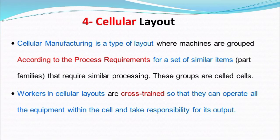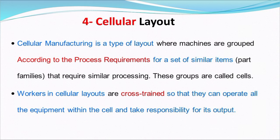The fourth type is cellular layout. Cellular manufacturing is a type of layout where machines are grouped according to the process requirements for a set of similar items — part families that require similar processing. These groups are called cells. For example, workers in a cellular layout are cross-trained so they can operate all the equipment within the cell and take responsibility for its output.